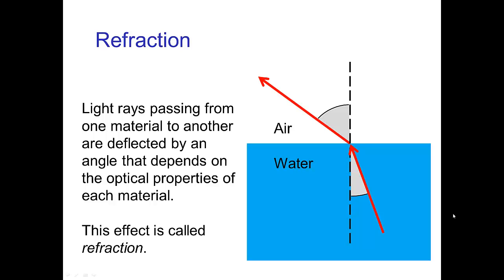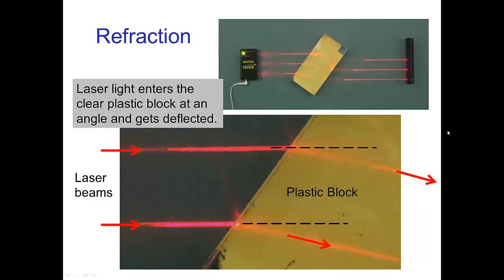What you're observing here are some examples of a phenomenon known as refraction. Refraction is the effect in which rays of light, when they pass from one material to another, are typically deflected in their direction. So a light ray coming up out of the water when it enters into the air is refracted — meaning the angle of the direction it's traveling changes. Here's another example: I have a couple of laser beams striking a clear plastic block, and inside the block we see that the beam is traveling in another direction — it's been deflected from its original direction.